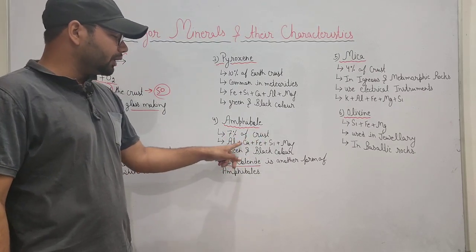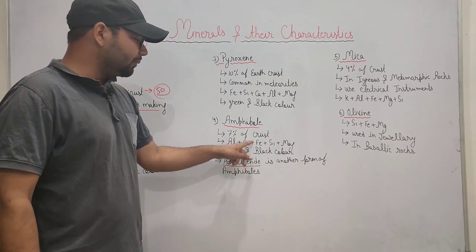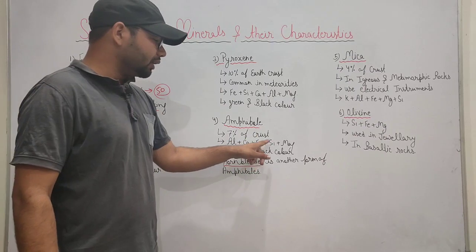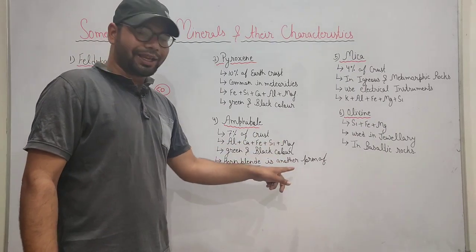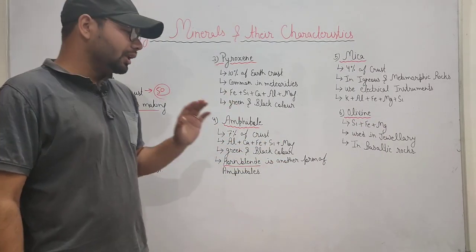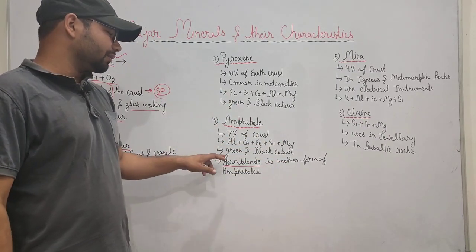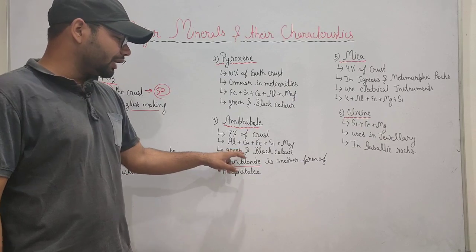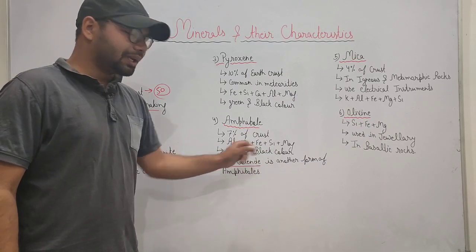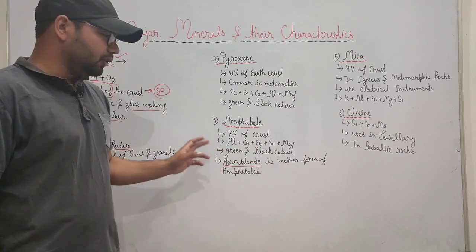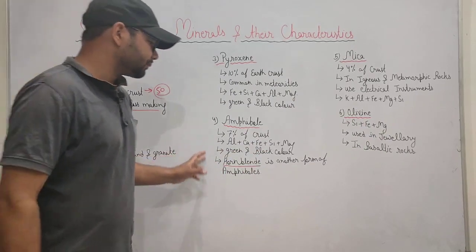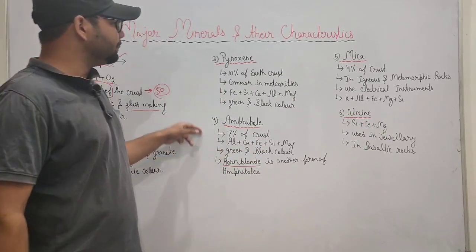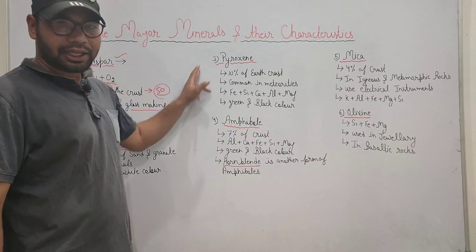This is made of aluminum, calcium, iron, silica, and manganese, and makes up about 7% of our Earth's crust. Its color is green or black.